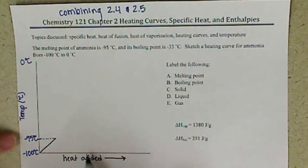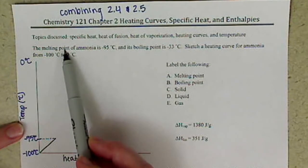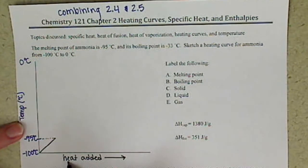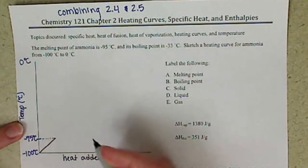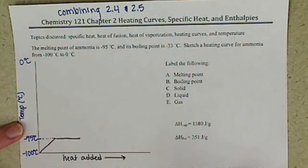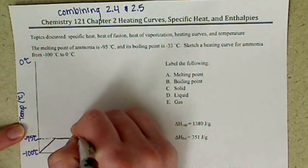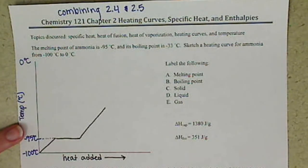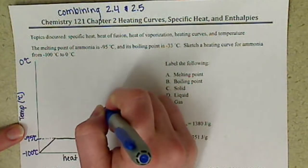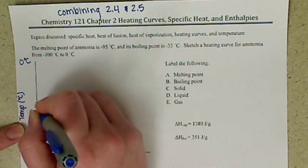As we continue to add heat at the melting point, we start to convert and melt the ammonia — going from a solid to a liquid. When we're melting a solid, the temperature does not change. The heat added goes into converting from solid to liquid, not into raising the temperature. Once everything converts to liquid, more heat goes into increasing the temperature up to the boiling point, which is negative 33 degrees Celsius. Note: this is not drawn to scale.